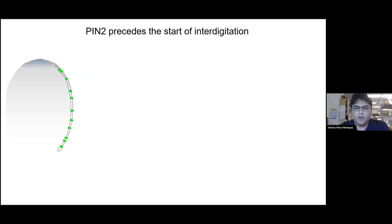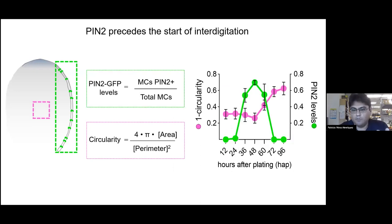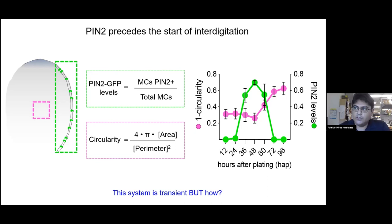Because some samples were showing strong PIN2 presence and others were not, we assumed it was a spatial-temporal regulation of its expression. We tried to correlate interdigitation — using this circularity descriptor — with the PIN2 levels of the margin cells. We discovered that PIN2 levels are transient: they have a peak of expression at about 48 hours and a rapid onset between 24 and 36 hours after placing the seed in growing conditions; between 60 and 72 hours the PIN2 disappears.